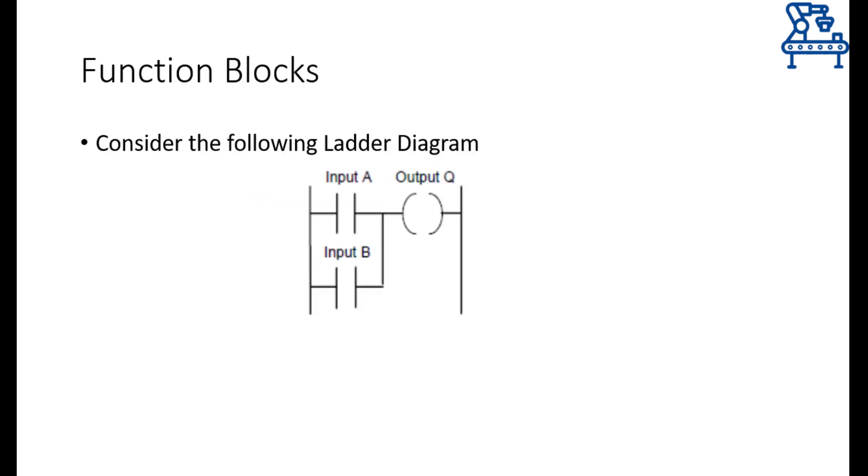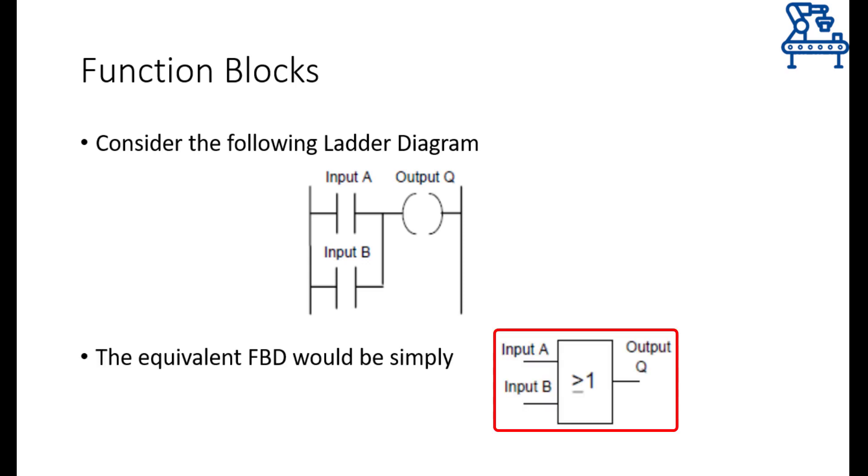Let's relate a ladder diagram more concretely and directly with function block diagrams through some examples. As a first example, consider this ladder diagram. You should be able to readily recognize that this ladder diagram is implementing OR operation between input A and input B. So, to implement the same thing using function block diagrams, it's quite simple and straightforward. This is the function block for the OR operation and by assigning input A and input B to the inputs of this block and output to Q, we can easily implement the OR operation through function block diagram.